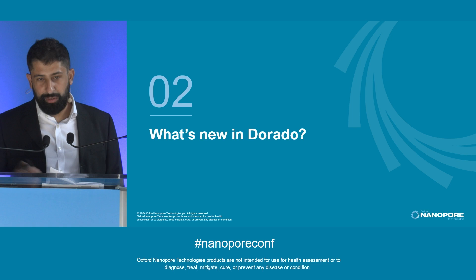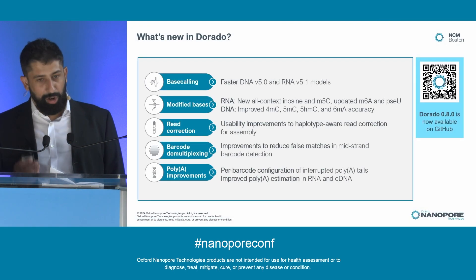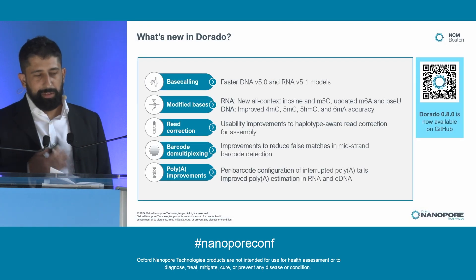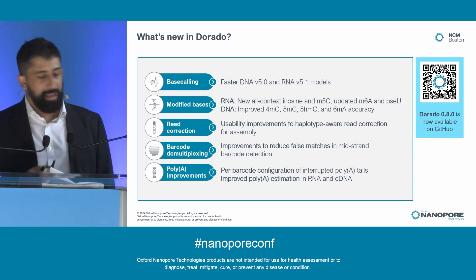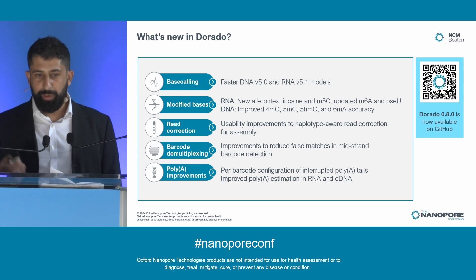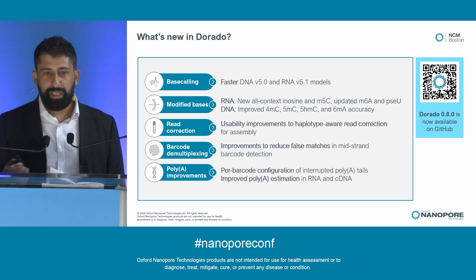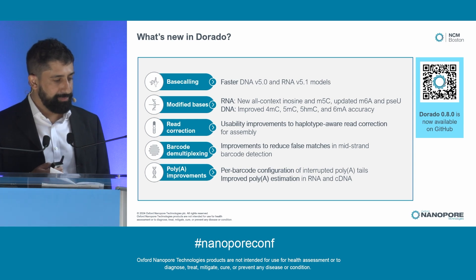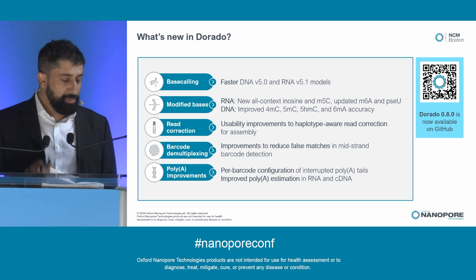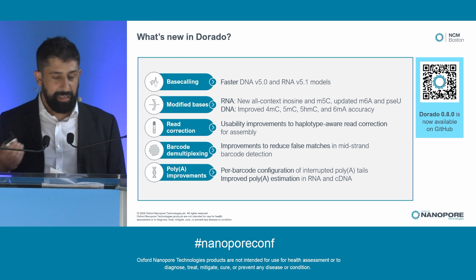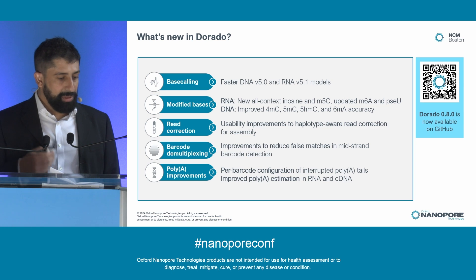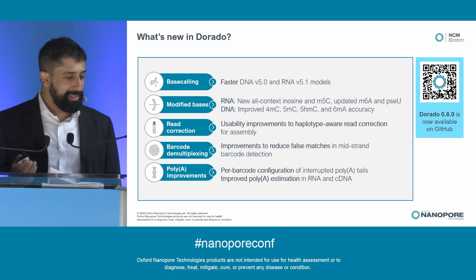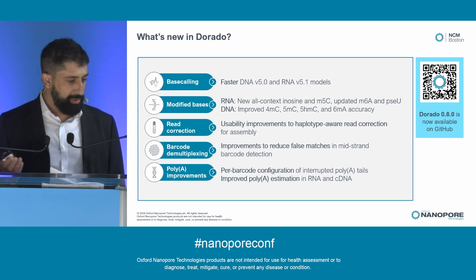Over the last few months since London Calling, we've primarily worked on five core things. On base calling, we're happy to announce today that we have faster DNA and RNA models — we know this is a pain point for some customers. On modified bases, we've got new all-context inosine and m5C models, which my colleague Bronja Boyden will speak about in detail. We've also updated our m6A, pseudouridine, 4mC, 5mC, 5hmC, and m6mA models for improved accuracy.